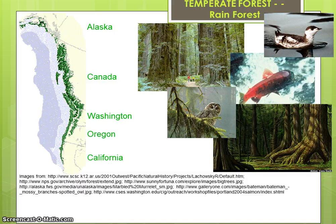A small patch of temperate rainforest occurs in the Pacific Northwest of North America, including areas of Alaska, Washington, Oregon, California, and Canada. This coastal strip of forest is generally characterized with the conifer forests that dominate the cool, temperate, and boreal zones.